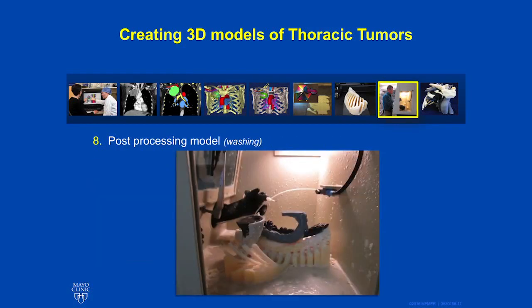Once the model is printed, we can wash away the support material. A high-pressure washer is used to create the final image of the model, washing the support material away. Hands are inserted through gloves inside the box to prevent damage to the user. The gloved hands can then be used to manipulate the spray and stream of water under high pressure to wash away the support material.